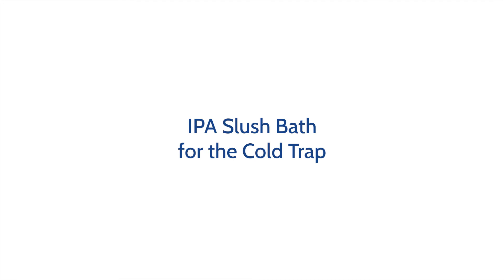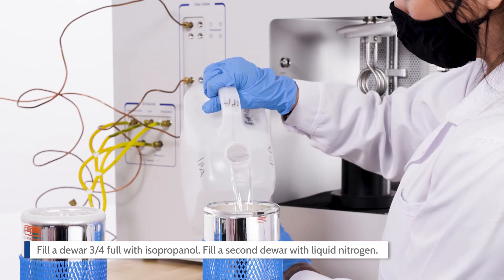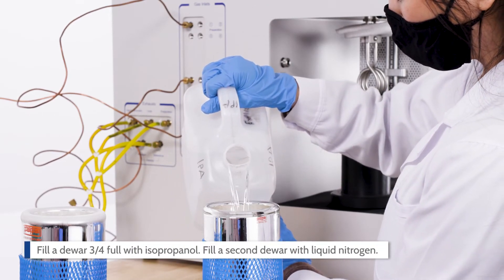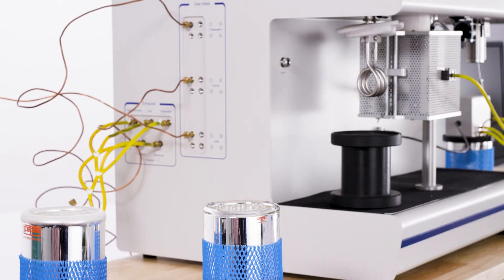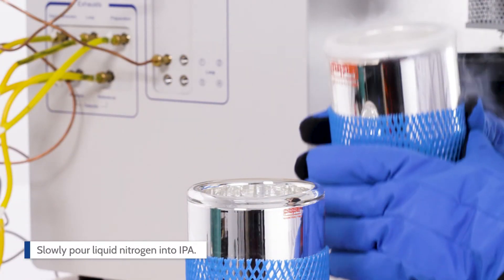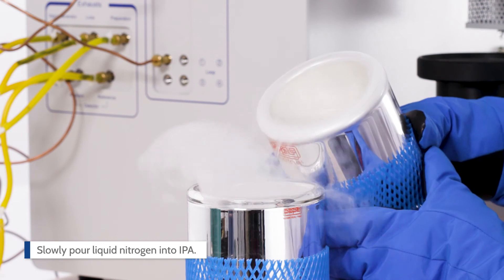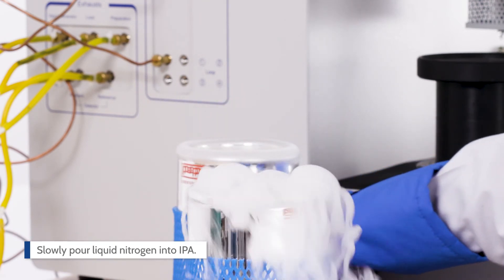Now we are ready to make the IPA slush bath for the cold trap. Fill the Dewar 3 quarters full with isopropanol. Fill a second Dewar with liquid nitrogen. Be sure to wear personal protective equipment. Slowly pour liquid nitrogen into IPA and stir frequently with a wooden rod until the consistency is thick enough to keep the rod standing.